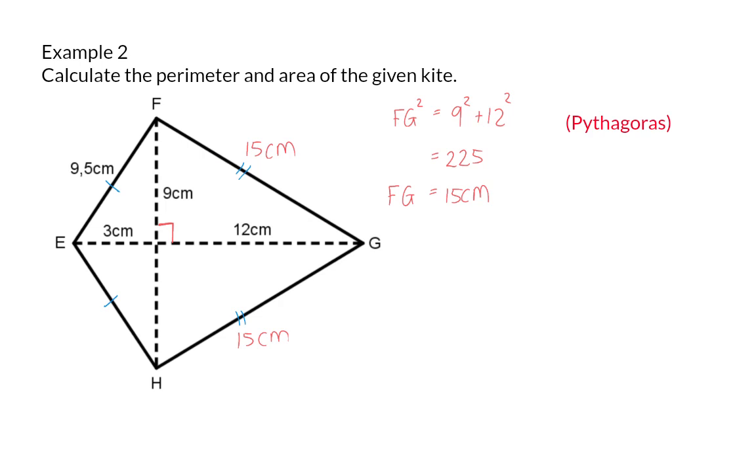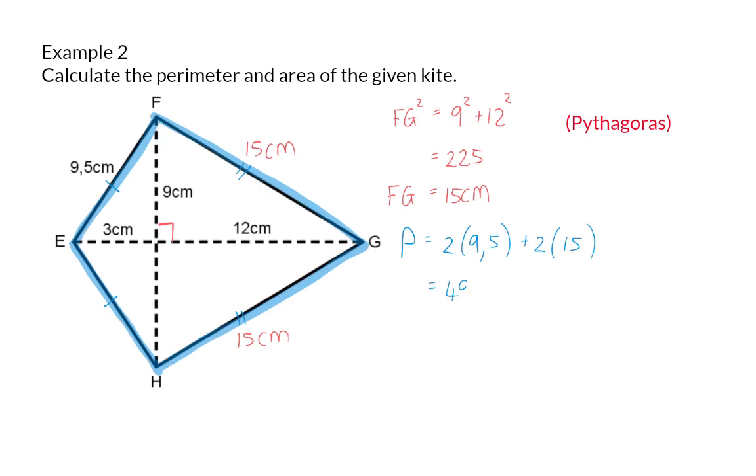So, now we can determine the perimeter. The perimeter consists of two sides of 9.5 and two sides of 15. So, the perimeter will be 49 centimeters.